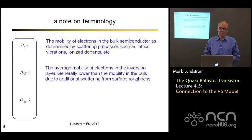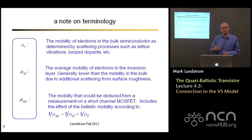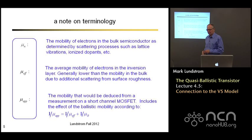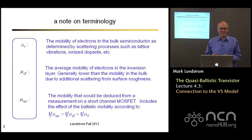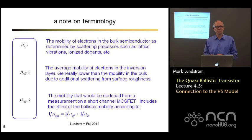If we do III-V heterostructure transistors, those interfaces can be almost atomically flat, and in that case you can get mobilities of electrons in the inversion layer very close to the bulk mobilities. The apparent mobility is the mobility you would deduce if you went in and measured a short-channel MOSFET. It includes the effect of the ballistic mobility, and we include them simply by adding their reciprocals. Whichever one is smaller controls the performance of the device. The ballistic mobility is proportional to channel length, so as channel length gets shorter, the ballistic mobility gets smaller and eventually controls device performance.